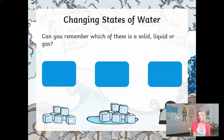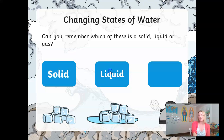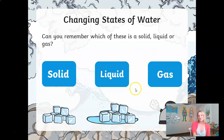Can you remember which of these is a solid, a liquid, or a gas? Nice and simple. We have the ice cubes being solid, the water or the melting ice cubes in this picture representing water which is a liquid, and the kettle represents the water vapor and the steam, which are gas.